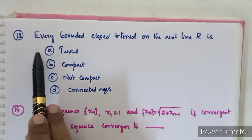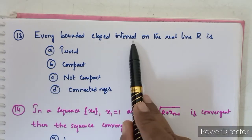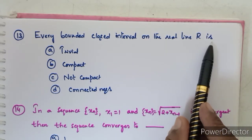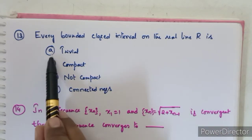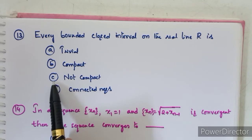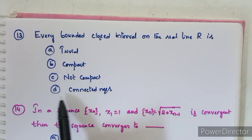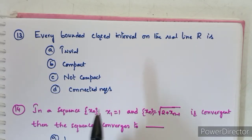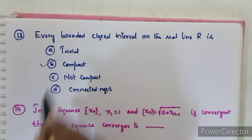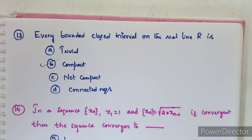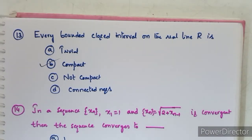Thirteenth question: every bounded closed interval on the real line R is: trivial, compact, not compact, or connected? Option B is correct: every closed bounded interval on the real line R is compact.